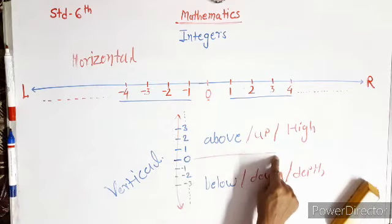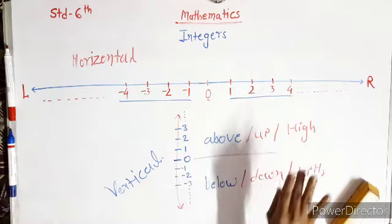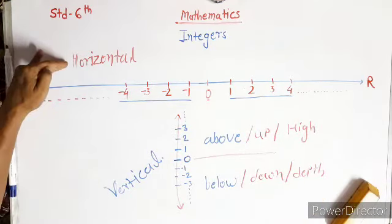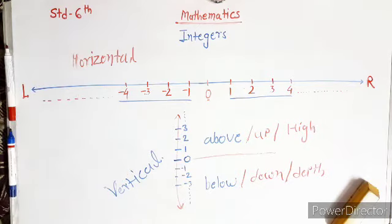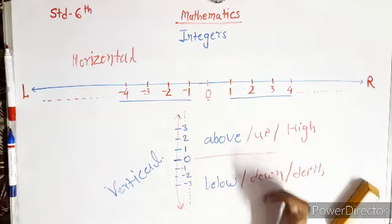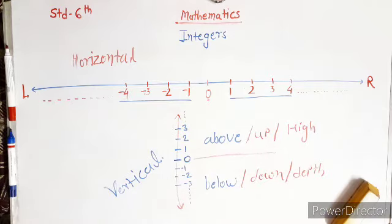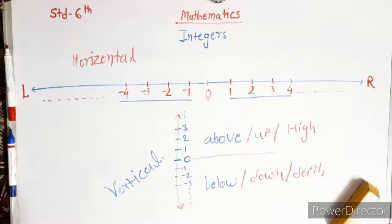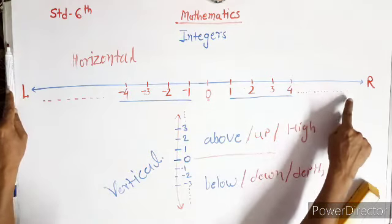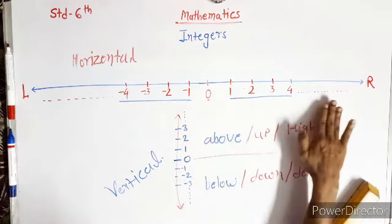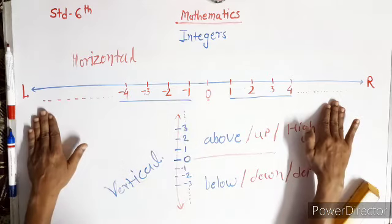Zero is the origin point. On the horizontal number line: right side numbers are positive, left side numbers are negative. On the vertical number line: zero is origin. Positive integers are called above, up, and high. Negative integers are called below and down. On the horizontal line, right side is positive and left side is negative. On the vertical line, above is positive and below is negative.